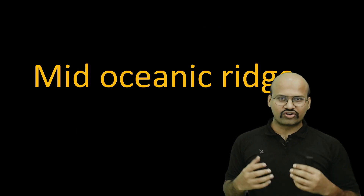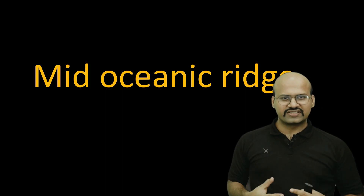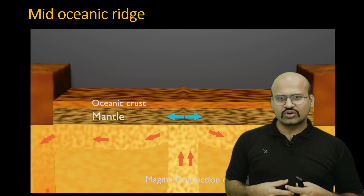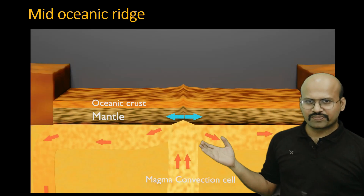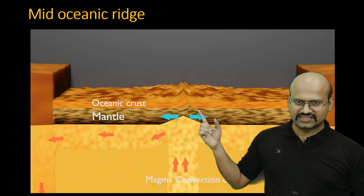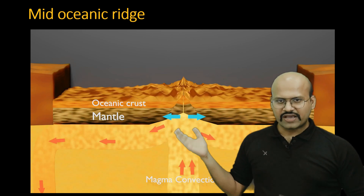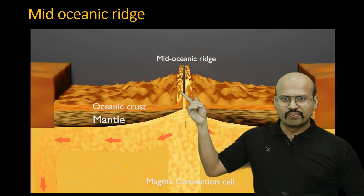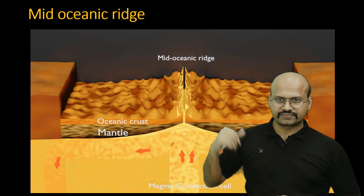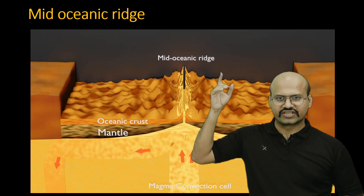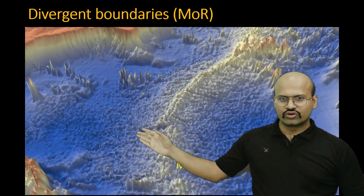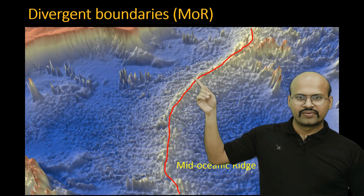Mid-oceanic ridges are found at divergent boundaries, mainly at ocean-ocean divergent boundaries. They form where magma from the asthenosphere reaches the oceanic floor, creating mountains on both sides of a central valley. These mountains are called mid-oceanic ridges and are generally found in the center of the ocean floor, as seen in the Atlantic Ocean floor.